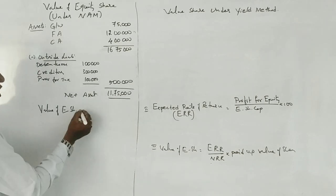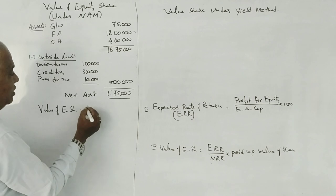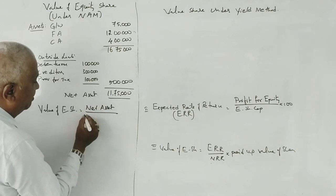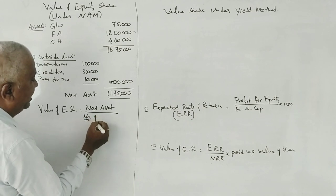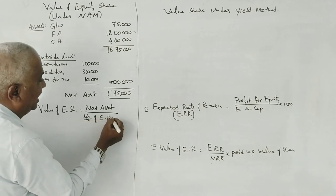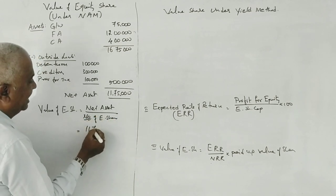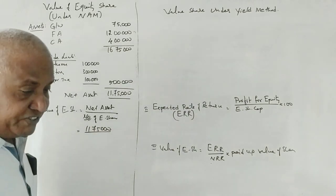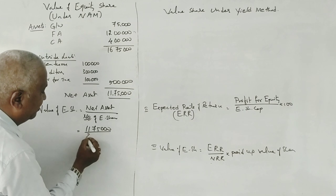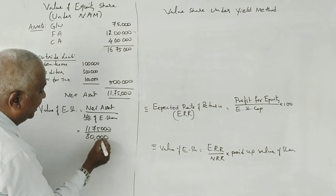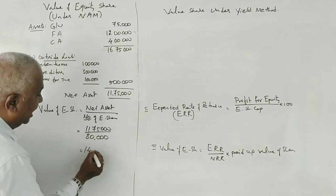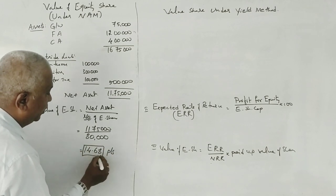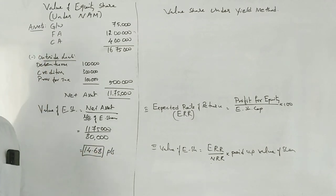Value of equity share equals net asset divided by number of equity shares. 11,75,000 divided by 80,000 equity shares equals 14.68 per share.